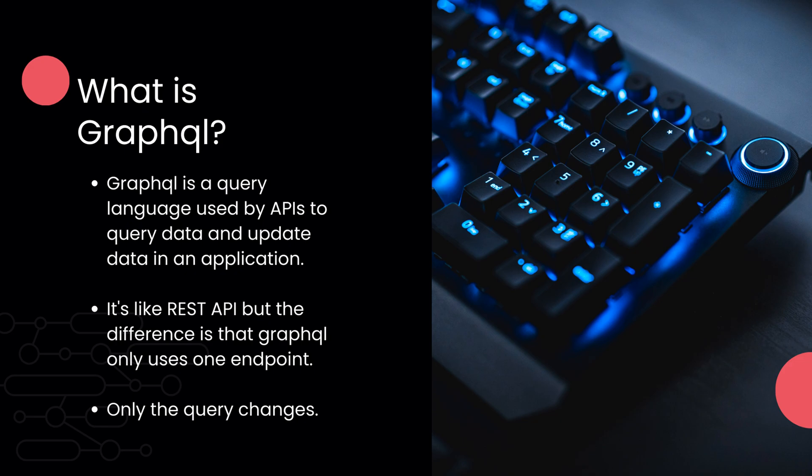So what is GraphQL? GraphQL is a query language used by APIs to query data and update data in an application. It is just like REST, but the difference is that GraphQL uses only one endpoint.